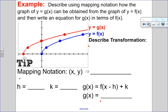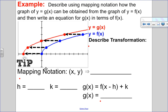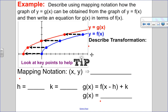In this first example, I want to describe using mapping notation how the graph of g(x) in red can be obtained from the original graph f(x). Looking at the blue points, you can see each one moves left four units — one, two, three, four — and this is the same for all the blue points. So all the blue points are being moved left four units, which means I have a horizontal translation four units to the left.